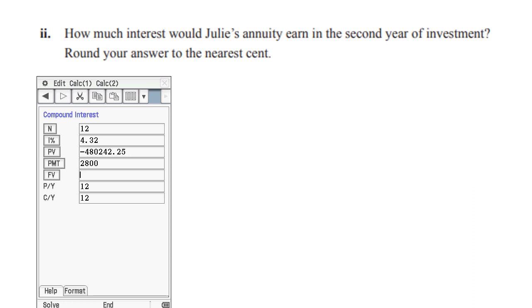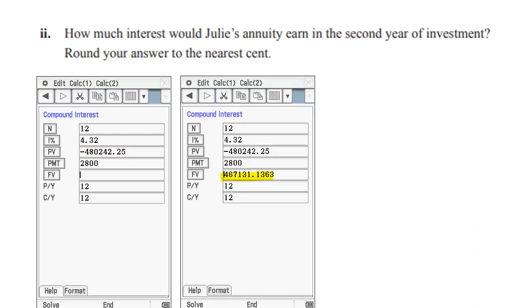Now we were told at the end of the first year we had this value so what we've done is we've shifted the final value up to the present value and again it's still gonna be 12 months so from the end of the first year to the end of the second year is 12 months. And so then we can press the FV button and we do get the final value of 46713.14.